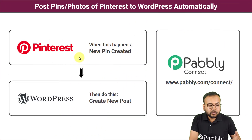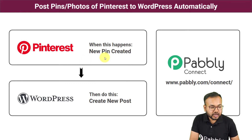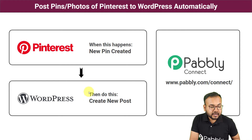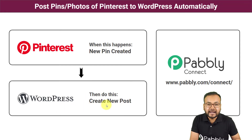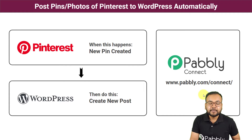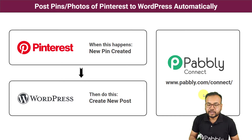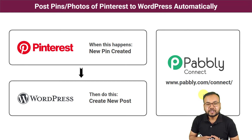So let me show you how this is going to work. The flow of this automation is: as and when you create a new pin in Pinterest, the same pin will be created as a new post on your WordPress website automatically. To make this happen we are using Pabbly Connect, which is an integration and automation tool. The best part is you will not require any coding skills or programming knowledge, so anyone can set up this automation very easily.